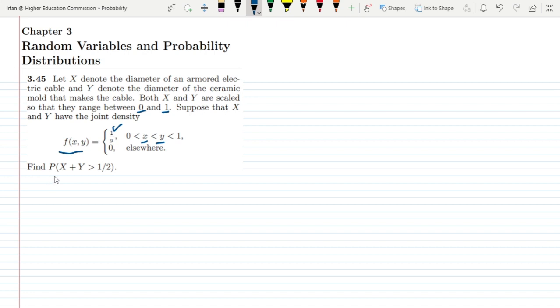So what do we have to find? We have to find the probability that X plus Y is greater than 1/2. Now solving it, let me solve it here. So I want to find out the probability that X plus Y is greater than 1/2.